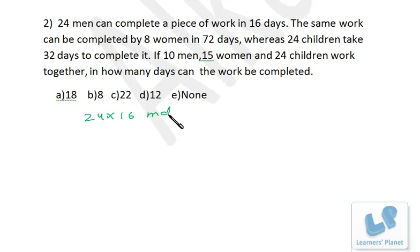The same work can be completed by 8 women in 72 days, so 8 into 72 women-days, and that's equal to 24 children, 32 days. So 24 children, 32 days, right? Never ever multiply the figures.